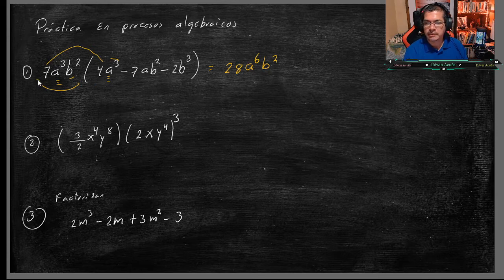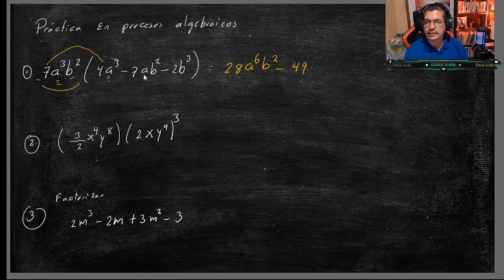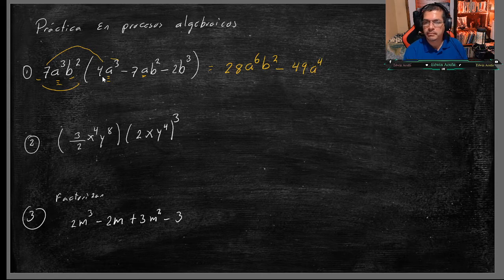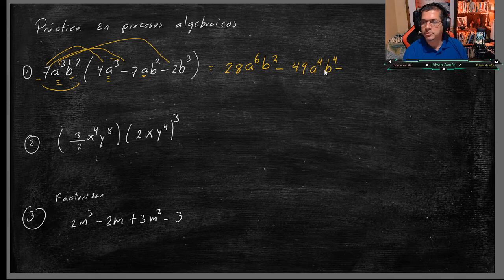Menos porque más por menos, menos. 7 por 7 sería 49. Luego A la 3 por A la 1 sería A la 4, B2 por B2, obviamente B4, menos porque es lo mismo concepto, ley de signos, menos por más menos, 7 por 2 es 14.